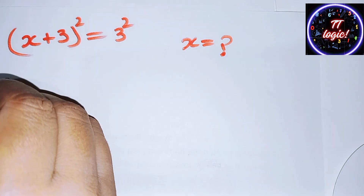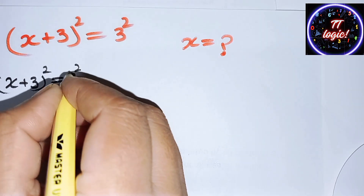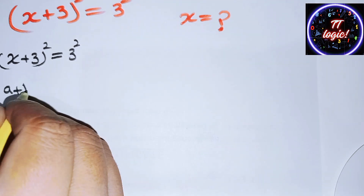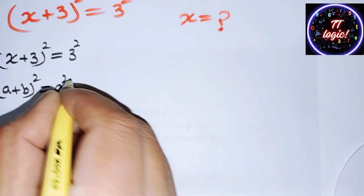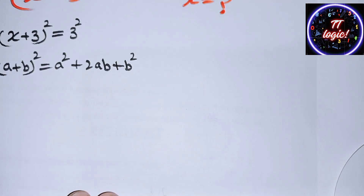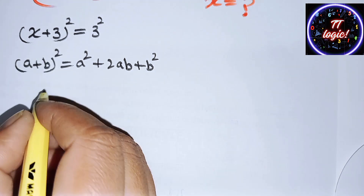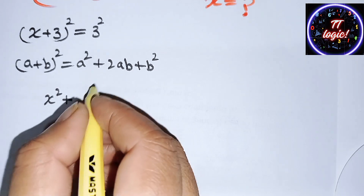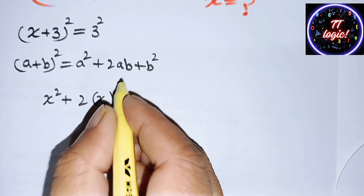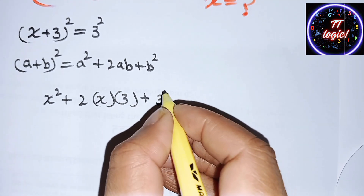First, we can write this as (x + 3)² = 3². Now we use a nice algebraic identity: (a + b)² = a² + 2ab + b². Applying this, a² is x², then plus 2 times a times b where a is x and b is 3.